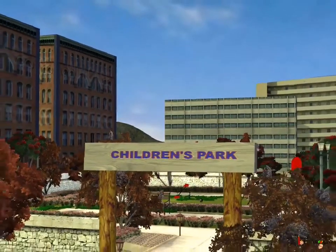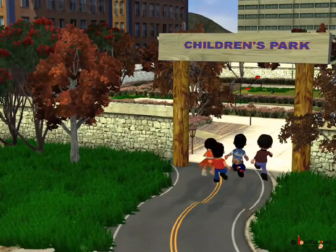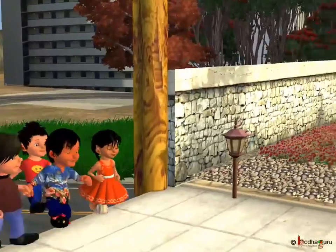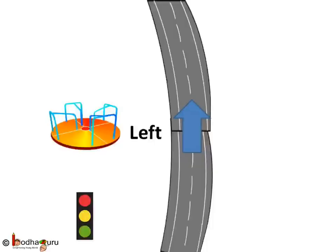If someone asks you where is the park, you first imagine where the park is and which direction the person is going before giving the direction to that person. Say for someone going north, the park is on the left side after the traffic signal. If someone is coming from north towards south, the park would be on his right side before the traffic signal. The park did not move anywhere, just our viewpoint changed.